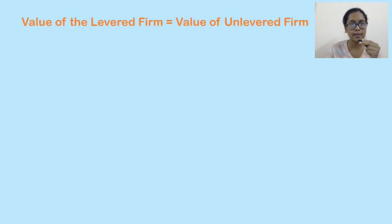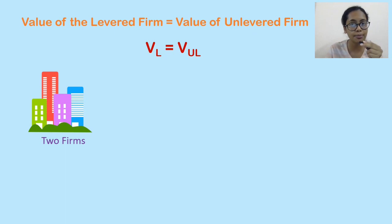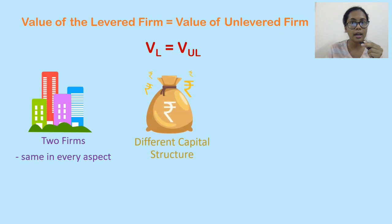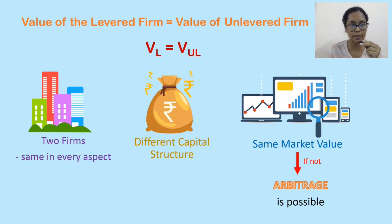The MM approach states that the value of the levered firm is equal to the value of the unlevered firm. The levered firm has debt whereas the unlevered firm has only equity. Two firms that are alike in every aspect except capital structure must have the same market value, otherwise arbitrage is possible. Arbitrage means two assets that are essentially the same — buying the less expensive while selling the more expensive.